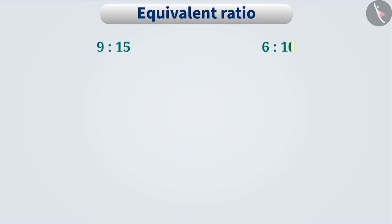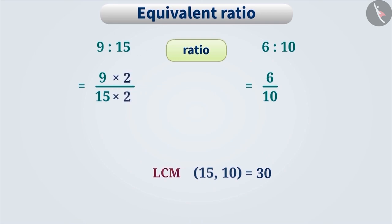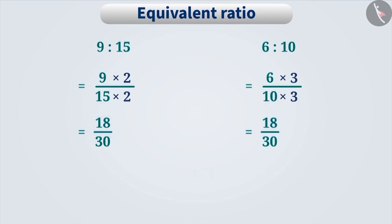Now imagine you are given two ratios — 9 is to 15 and 6 is to 10. To compare them, first express them as fractions: 9 by 15 and 6 by 10. Then convert them to fractions with the same denominator. The LCM of 15 and 10 is 30. Multiplying 9 by 15 by 2 by 2 gives 18 by 30, and multiplying 6 by 10 by 3 by 3 gives 18 by 30. Since both fractions are equal, 9 is to 15 and 6 is to 10 are equivalent ratios.